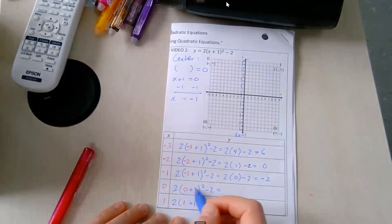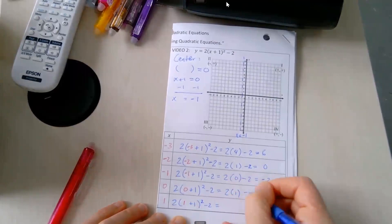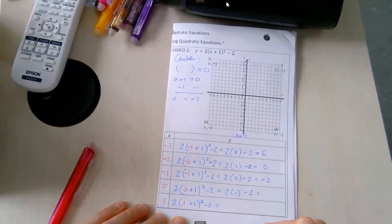0 plus 1 is 1. 1 to the second power is 1 times 1, which is 1. So we have 2 times 1, then minus 2. 2 times 1 is 2, 2 minus 2 is 0.